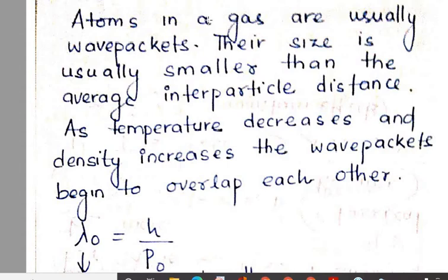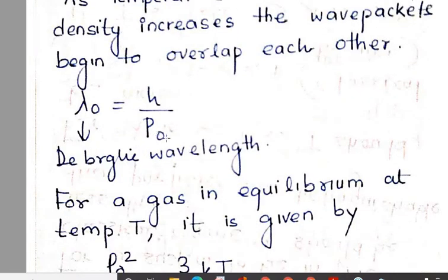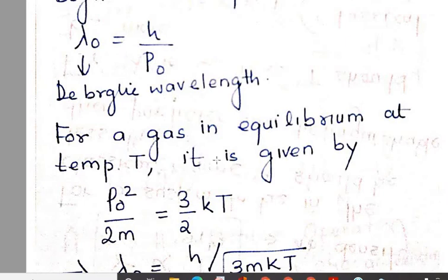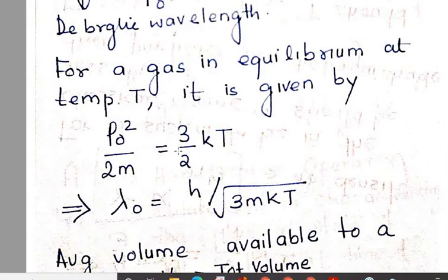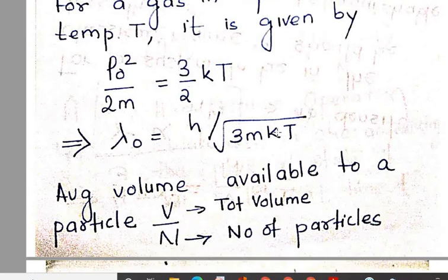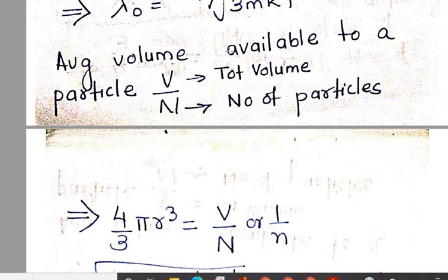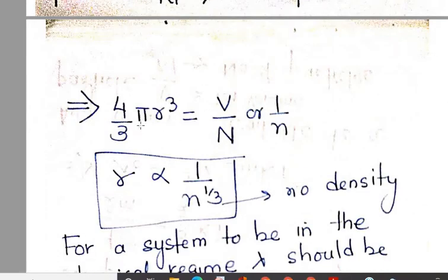Hello everyone, today we will be discussing about an ideal Bose system. We know that generally as the temperature decreases, the density increases and the wave packets, which are the atoms in a gas, begin to overlap each other such that lambda₀ = h/p₀, where p is the momentum. For a gas in equilibrium at temperature T, p₀²/2m = (3/2)KT, such that the de Broglie wavelength lambda = h/√(3mKT). This is significant because lambda is inversely proportional to p. The average volume available to a particle is V/N, such that R is proportional to N^(1/3), the number density.